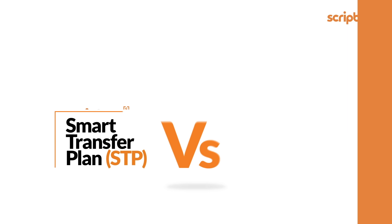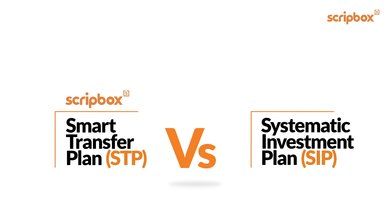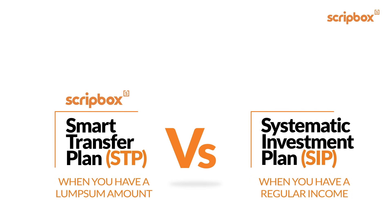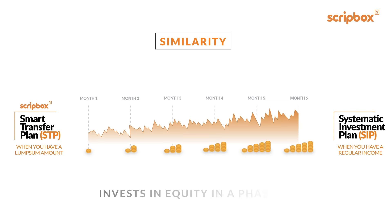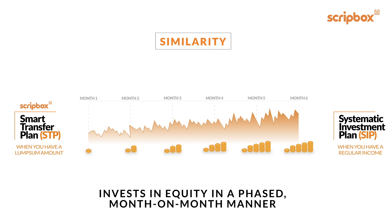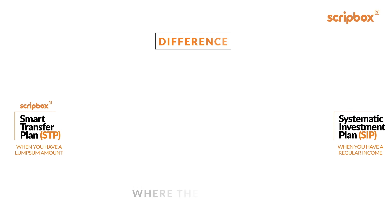You could ask: an SIP also helps with rupee cost averaging, so why should you choose Scribbox Smart Transfer Plan? An SIP and Scribbox Smart Transfer Plan are similar because your money is invested in equity funds in a systematic, month-on-month manner. The key difference is where the investment amount is sourced from.